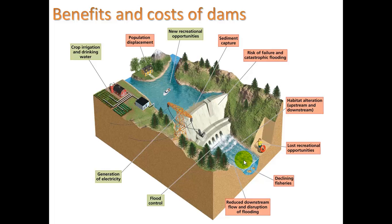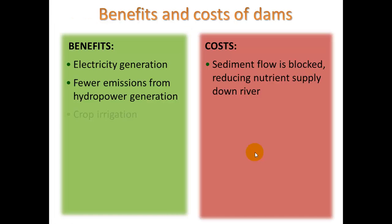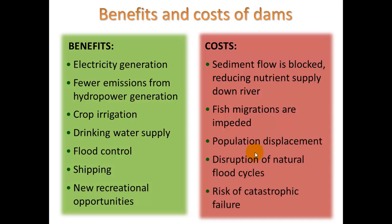On the plus side with dams, you do get irrigation water and you can make electricity as water passes through and turns generators. You have control of floods — if you get a big storm, you can keep it from rushing down too quickly. You also have new recreational activities or opportunities upstream, though downstream you may have a loss of recreational activities. It's pretty hard to kayak down a river that's been dammed.